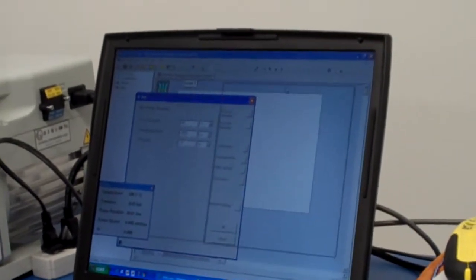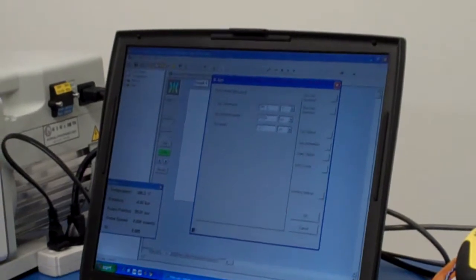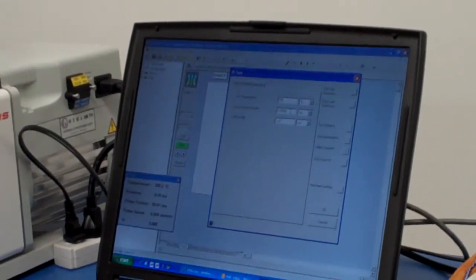If we hit edit, this is the IV test setup. So we can choose the temperature. We need 295 for this material. The internal diameter of the die, this is 20,000. And this is the length of the die. So that's all correct. This is the default settings, 20,000 die.